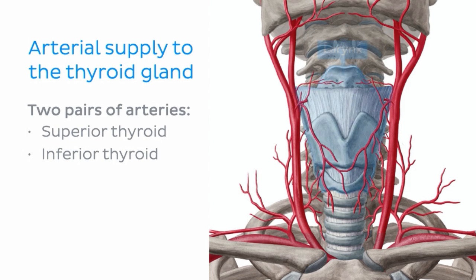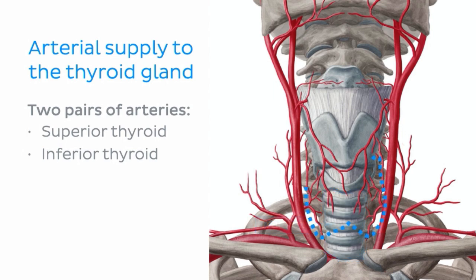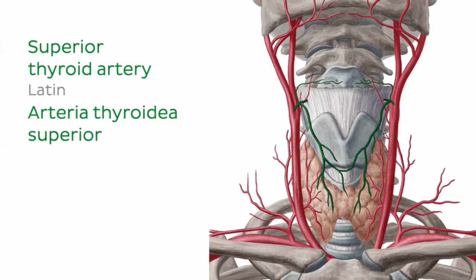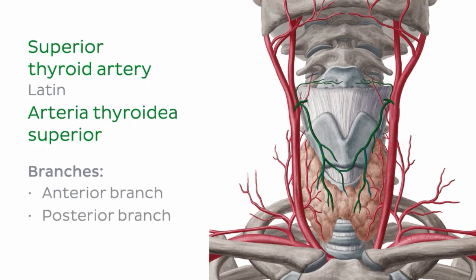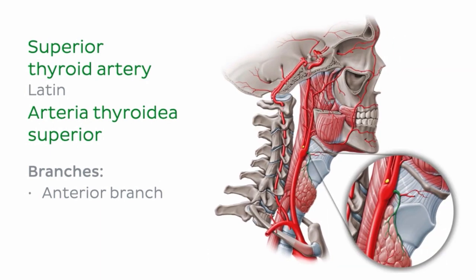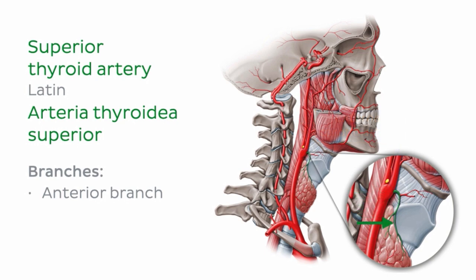In this image, we can see the larynx and trachea within the neck. Remember, our thyroid gland is anterior to these structures, so it would sit just about here. The superior thyroid artery, now highlighted in green, arises from the external carotid artery. From this lateral view of the head and neck, we can see the superior thyroid artery arising from the external carotid artery and travelling along the thyroid gland.